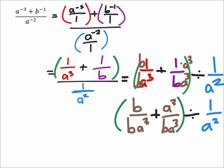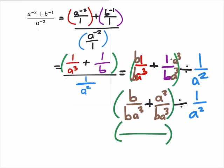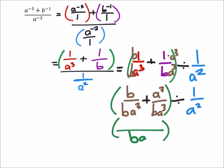So now that I have common denominators, what I can do is write this as one full fraction with a common denominator of b a cubed. So take that back. b a cubed, and then in the numerator, I've got the b, and then I'll add that to a cubed.